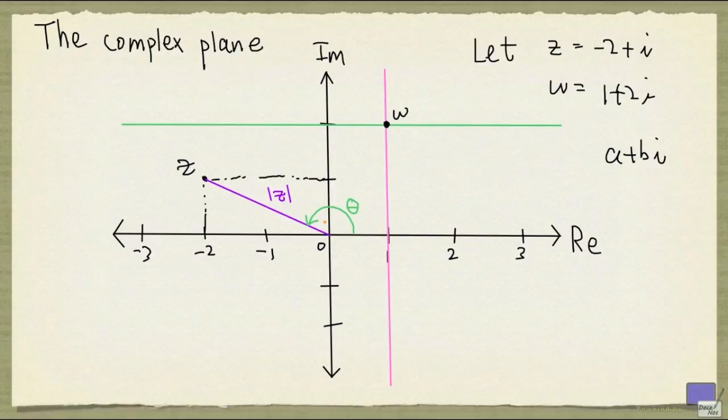So let's see if we can work out this angle theta here. The modulus of z is not difficult to obtain, because we already have the number here is minus 2 plus i, so the modulus of z is going to be the square root of minus 2 squared plus 1 squared, and that is the square root of 5.